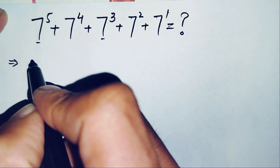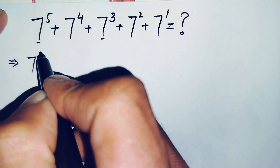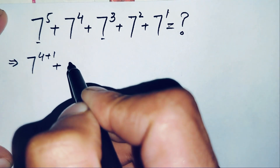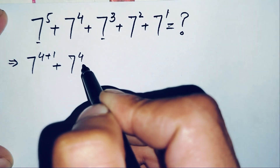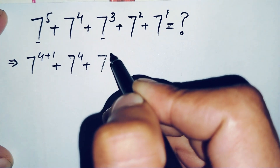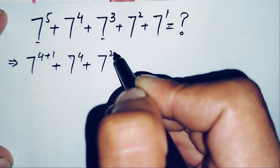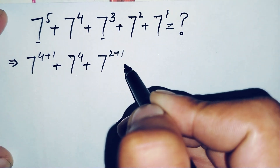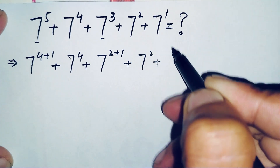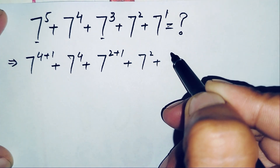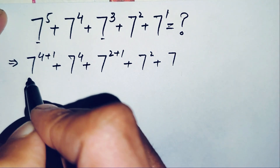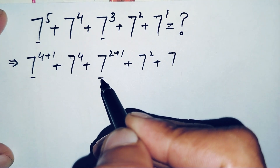We can write seven raised to power five as seven raised to power four plus one, and seven raised to power four stays the same. Similarly, seven raised to power three can be written as seven raised to power two plus one, and seven raised to power two stays the same. Seven raised to power one is simply seven.